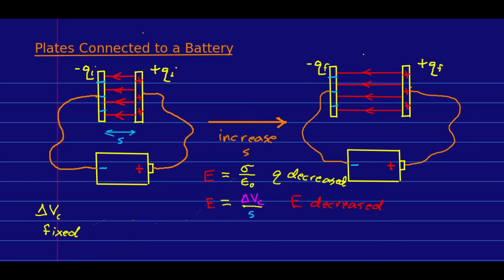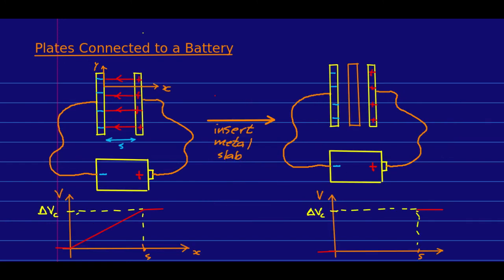I'm going to leave it to you, partly during the questions following these lectures, to think about other cases for connected or isolated capacitors — what happens when we change the potential difference of the battery, when we change the plate area, and what other changes you can come up with. So let's return to the question of what happens when we insert something inside the capacitor. What I inserted was paper, which is an insulator, but let's start by thinking about putting a conductor, like a metal slab, in between the plates. That's going to turn out to be a little easier.